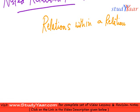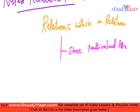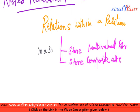Basically, a nested relational model gives me the freedom to store multi-valued attributes and to store composite attributes in a single tuple. So let's take an example to see what a nested relational model looks like.